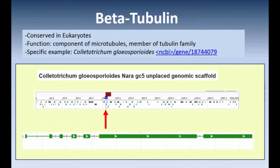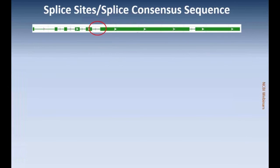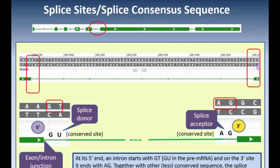Let's look at beta tubulin as another example, from a fungus. This is a member of the tubulin family, and it has seven exons. In this organism, none of the exons include untranslated regions, so all of the exons for this gene in this particular organism are coding.